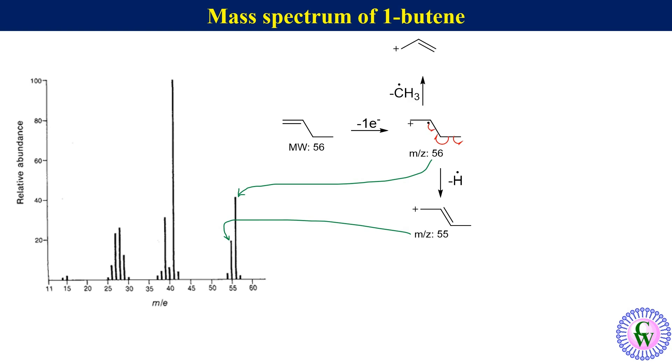The allyl cation has an m/z value of 41, which forms the base peak of the mass spectrum.